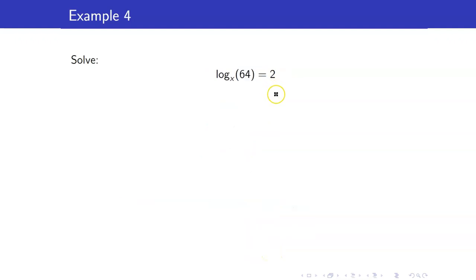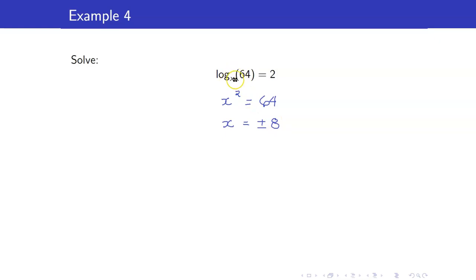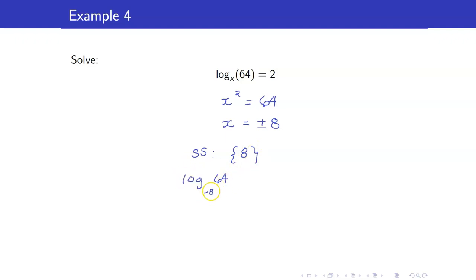Next, let us consider the logarithm of 64 to the base x equals 2. We transform this to exponential form: our base is x, our exponent is 2, and this equals the power which is 64. This gives us that x is plus or minus 8. However, notice that x is the base of your logarithm. If you are the base of the logarithm, it has to be greater than 0. Hence, the solution set is just the set containing 8. We cannot have logarithm of 64 to the base negative 8.